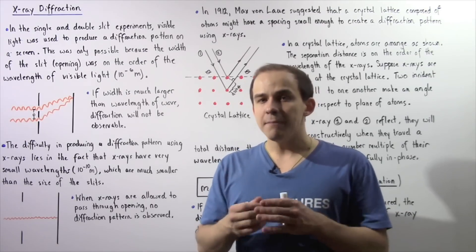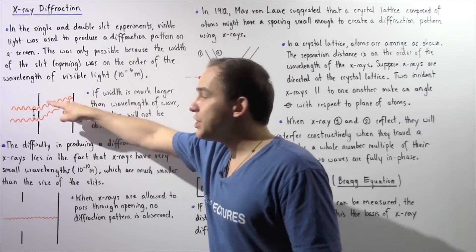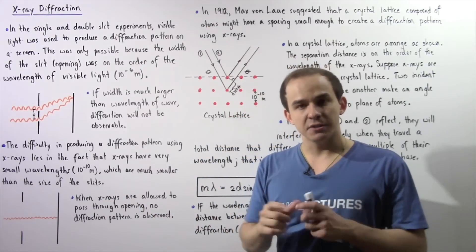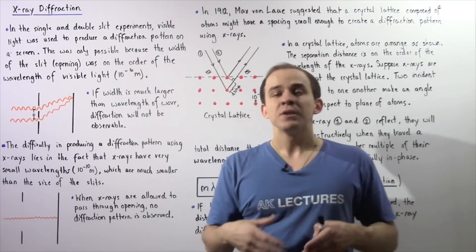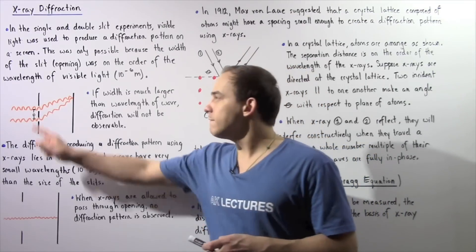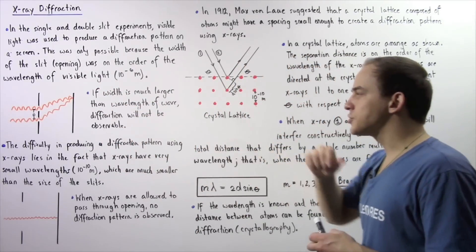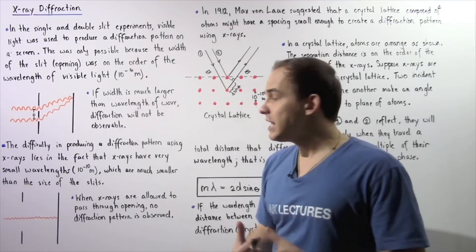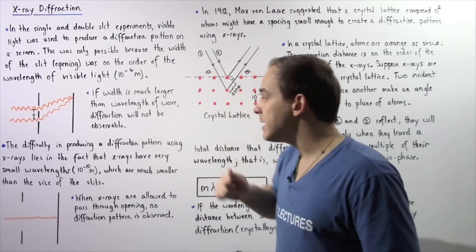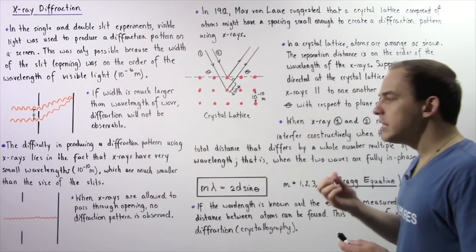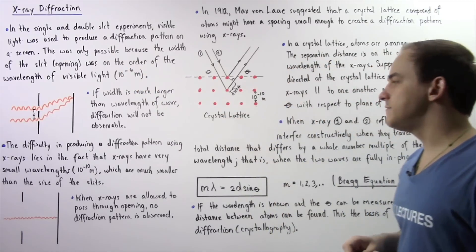That's exactly what happened when scientists tried to point X-rays at these double slits. The difficulty in producing a diffraction pattern using X-rays lies in the fact that X-rays have a very small wavelength, about 10 to negative 10 meters, which is much smaller than the size of these slits, which is about 10 to negative 6 meters.